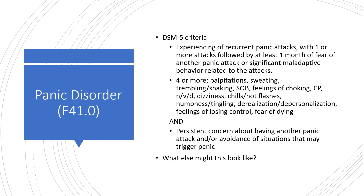DSM-5 criteria for panic disorder include recurrent panic attacks, with one or more attacks followed by at least one month of fear of another panic attack or significant maladaptive behavior related to the attack. Four or more of the following must be present: palpitations, sweating, trembling or shaking, shortness of breath, feeling as if choking, chest pain, nausea, vomiting, diarrhea, dizziness, chills, hot flashes, numbness, tingling, derealization, depersonalization, feelings of losing control, fear of dying, and persistent concern about having another attack with avoidance of triggering situations.